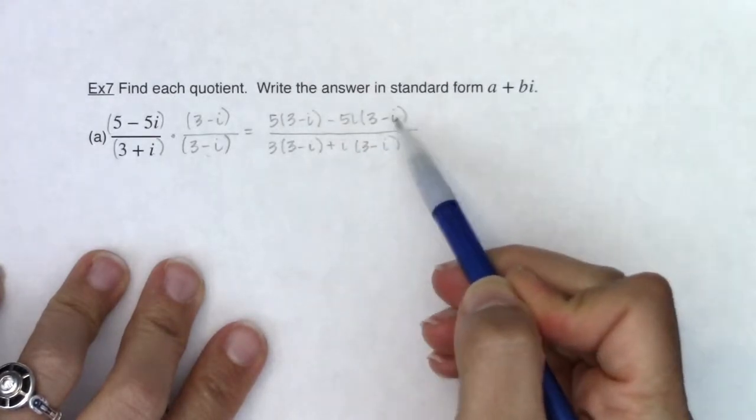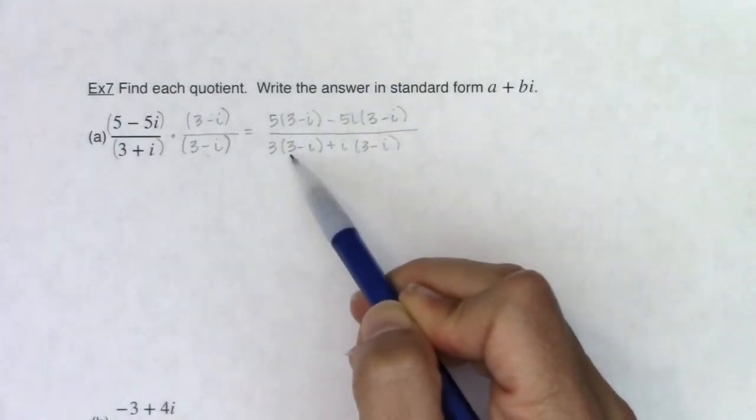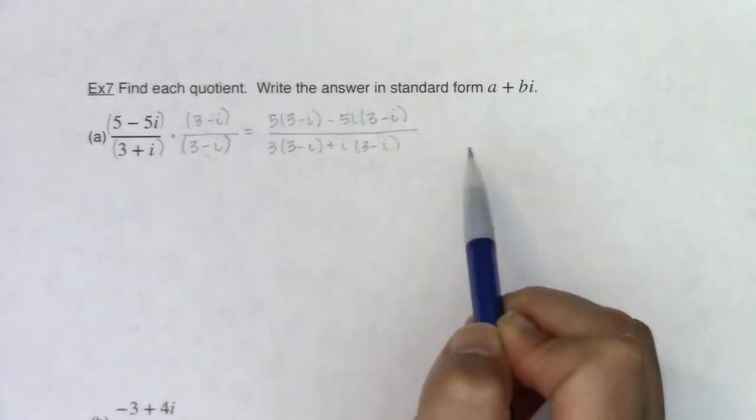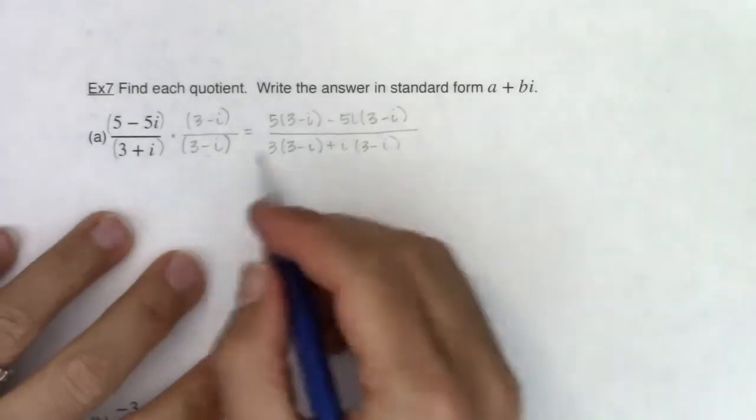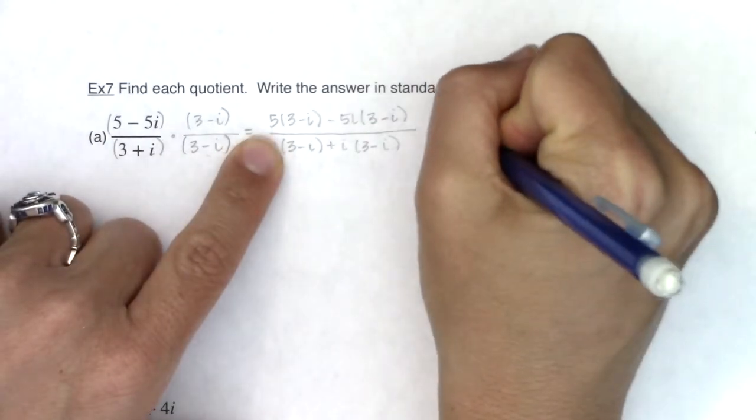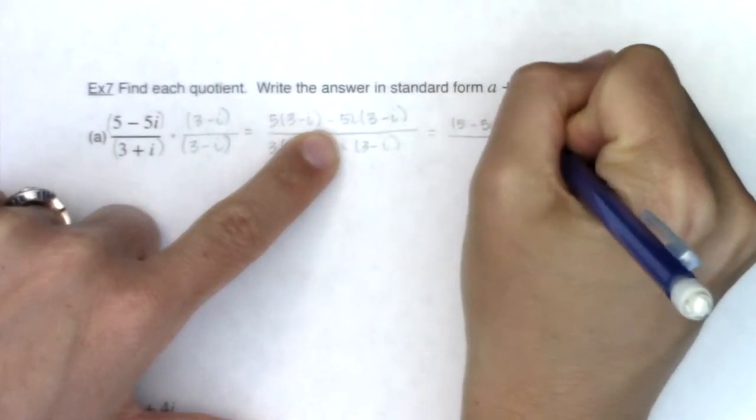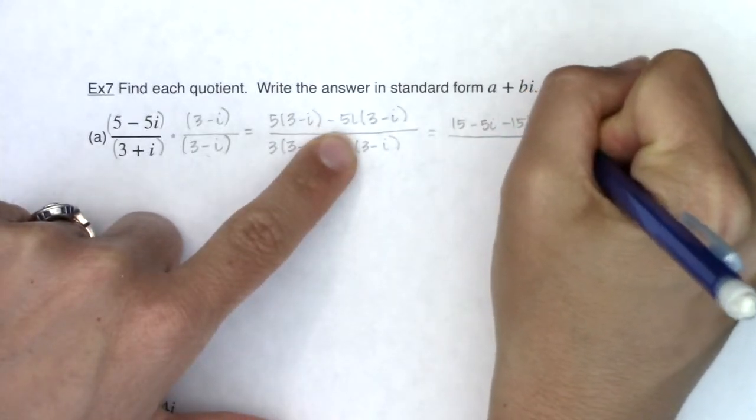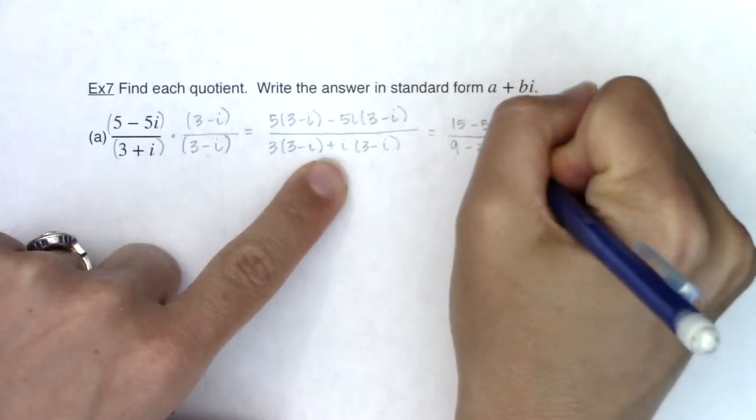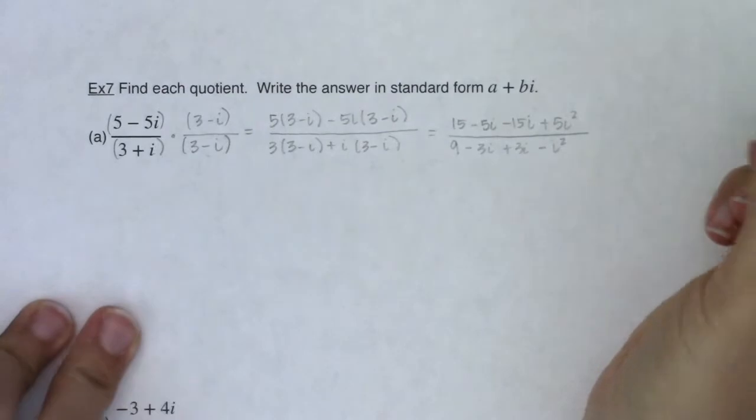Now be careful. I can't go canceling these. I can't cancel binomials, just I can't cancel one term of a binomial. I'd have to cancel the entire binomial to the entire binomial, and I don't have that in this case. I'm going to keep on distributing. So we've got 15 minus 5i minus 15i plus 5i squared. Here I have 9 minus 3i plus 3i minus i squared.